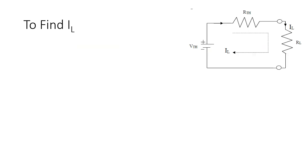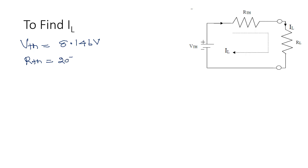Step 3: Find the load current. This is the Thevenin's equivalent circuit — V-Thevenin in series with R-Thevenin, and finally we include the load resistor. We know that V-Thevenin is 8.146V, R-Thevenin is 207.64 ohm, and the load resistor is 1 kilo ohm, that is 1000 ohm.